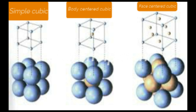Second is body-centered cubic arrangement, and third is face-centered cubic arrangement. In the simple cubic arrangement, reading the diagram carefully, you will find atoms are only at the corners of the cube — so 8 atoms are represented. In the second diagram, the body-centered cubic, in addition to the 8 atoms at the corners, one more atom is present at the center, which causes the separation between corner atoms to increase.